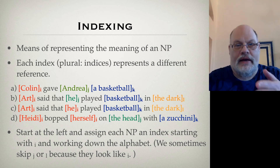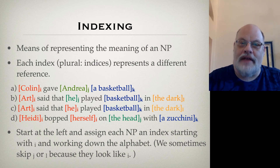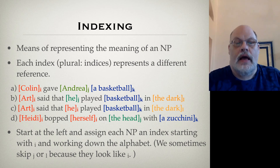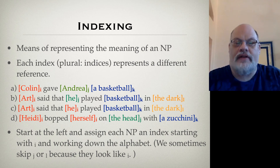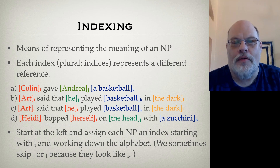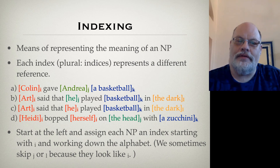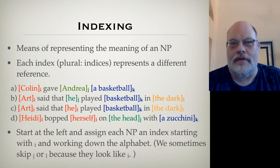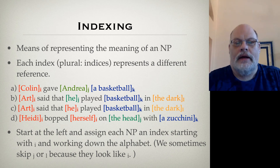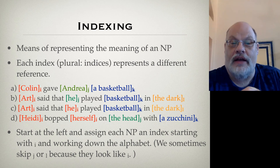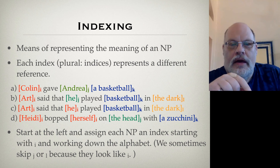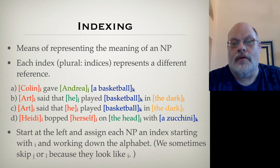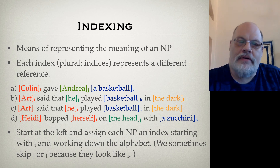To assign indices, we start at the left-hand side of the sentence, identify all the noun phrases — note it's noun phrases, not just nouns, because the noun phrase is what bears reference — and assign each one an index. For convention, we always start with the letter I, then work down the alphabet. Sometimes we skip J and L because when subscripted they can be hard to distinguish from I. It doesn't really matter what letter you start with, but the tradition is to start with I.